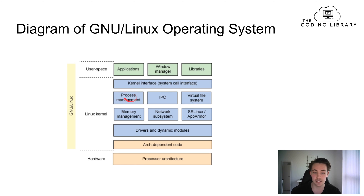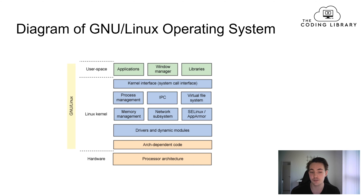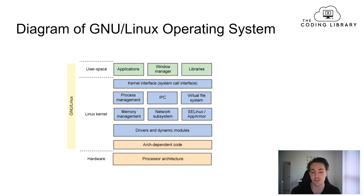Down here we have process management, so we manage how the processes are executed on the hardware inside the Linux kernel. It handles process management by executing processes with some kind of scheduler. We also have IPC, which is inter-process communication — how different processes communicate with each other.